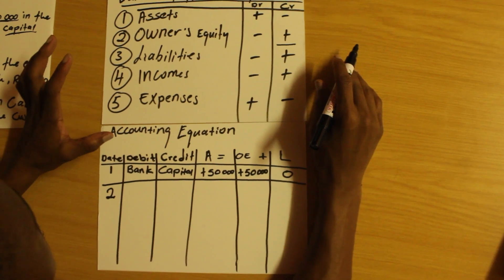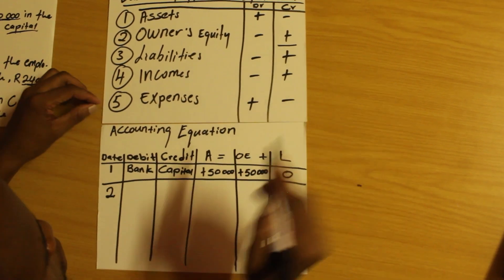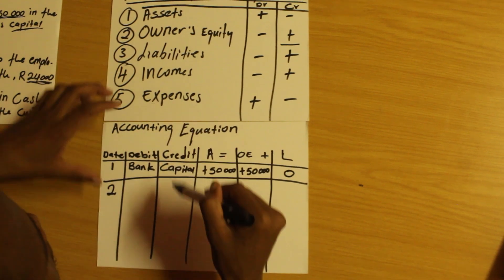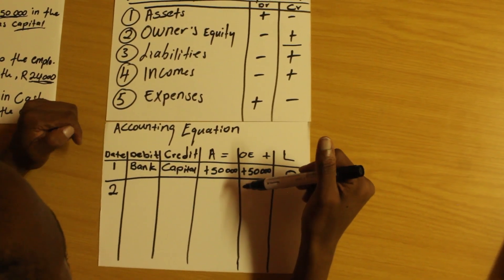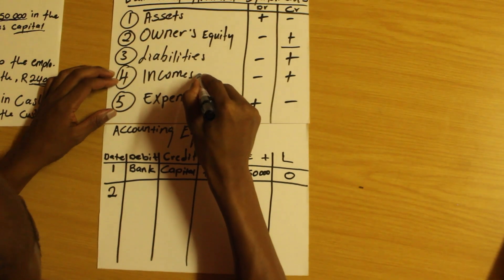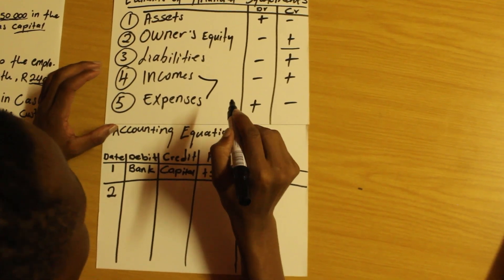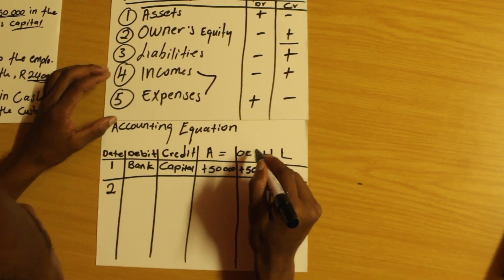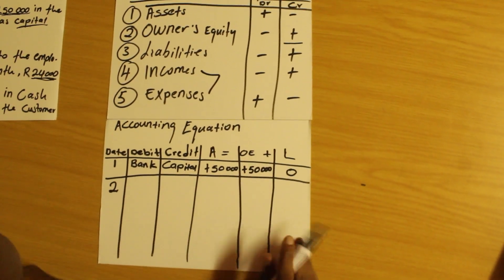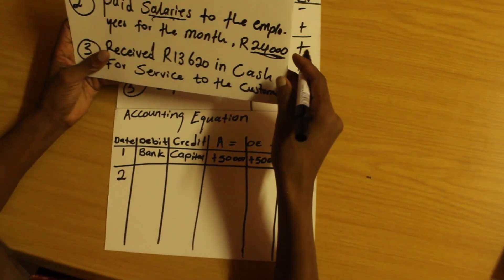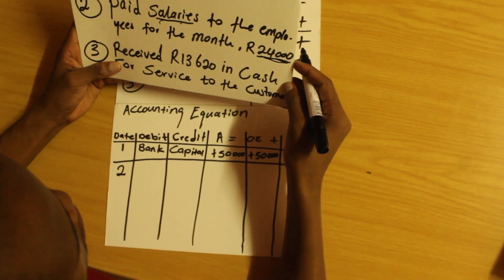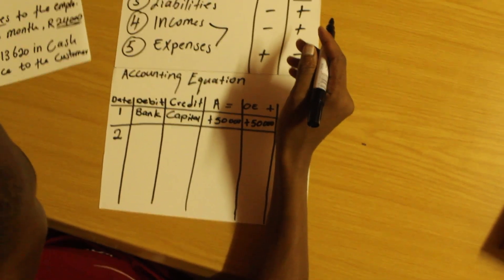These accounts — incomes and expenses — are not directly part of the accounting equation, but they are elements of financial statements and can form part of it. Incomes increase the owner's equity and expenses decrease the owner's equity. So let's see how to record this transaction: paid salaries to employees for the month, 24,000 rand. Two accounts affected: salaries and bank.